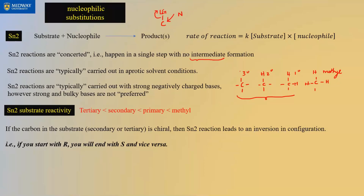When your substrate is secondary or tertiary, you may have chirality — meaning the carbon has four different groups. If the substrate is chiral, the product will result in inversion of configuration. That means if you start with R, you'll end with S, and if you start with S, you'll end with R. The key points: no intermediate, aprotic solvent, strong negatively charged base, substrate reactivity order, and inversion of configuration.